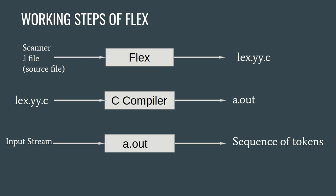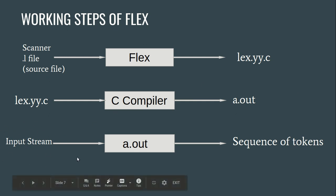To further break down the workflow: the scanner or Flex takes the source file with a dot-l extension, then converts it into lex.yy.c. That C file is then compiled by the C compiler, which produces a dot-out executable. This executable takes input text from us and produces a sequence of tokens. This is how Flex works and finds different patterns in our input.